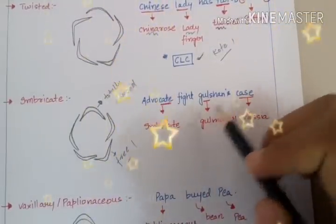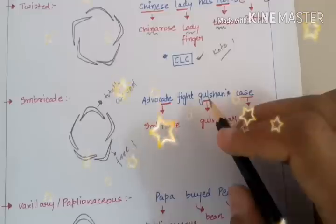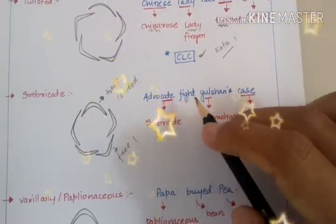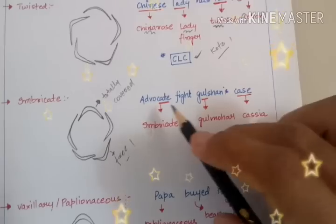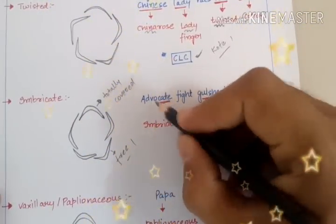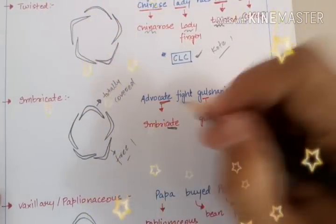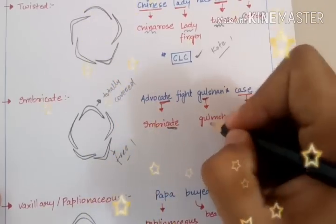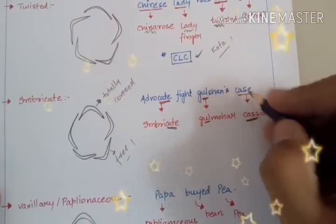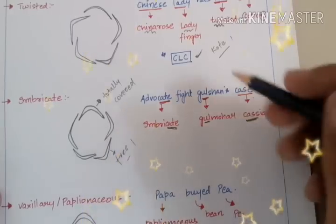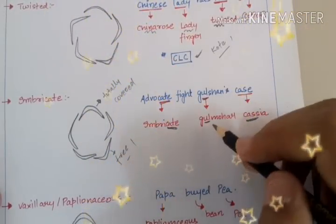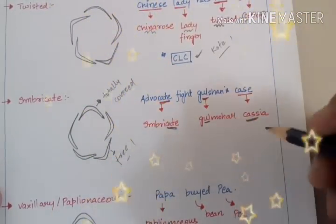The examples of Imbricate Estivation: 'Advocate fight Gulshan's case.' Gulshan is a man who wants the advocate to fight his case. Advocate, as the ending indicates, means Imbricate Estivation. Gulshan's means Gulmohar, and case means Cassia. So Imbricate Estivation is shown by Gulmohar and Cassia.